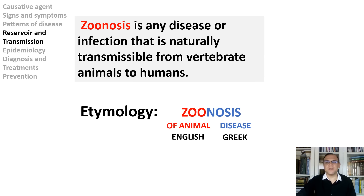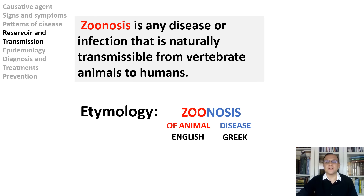Zoonosis is an infectious disease that has jumped from animals to humans. There are over 200 known types of zoonosis. Zoonotic pathogens can spread to humans through direct contact or through water, food, or the environment. They represent major public health problems due to our close relationship with animals in agriculture, as companions, and in the natural environment. Some diseases, such as HIV, begin as zoonosis but later mutate into human-only strains. Other zoonoses can cause recurring disease outbreaks, such as Ebola virus disease and salmonellosis.